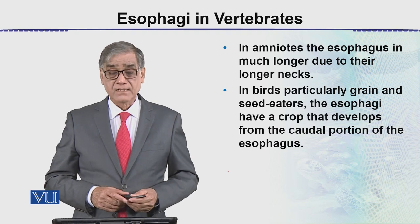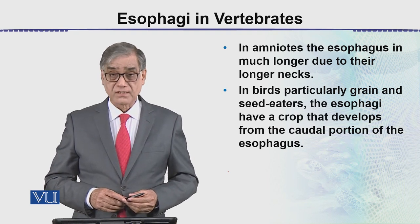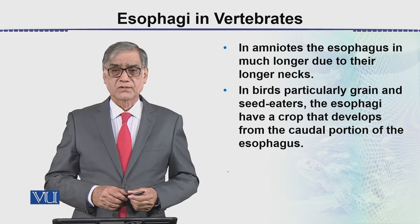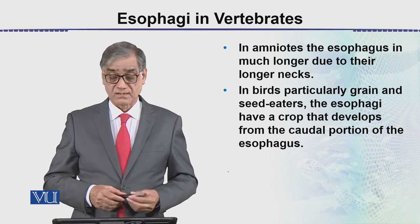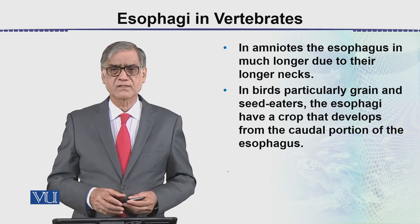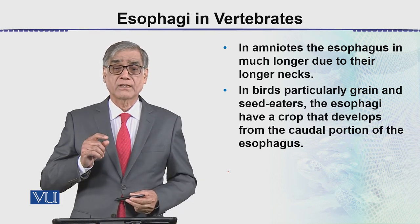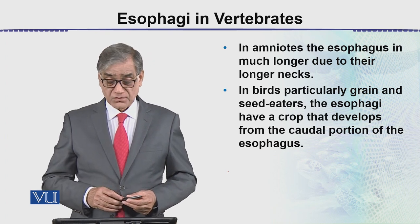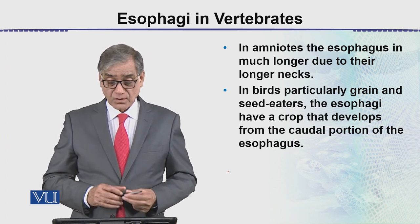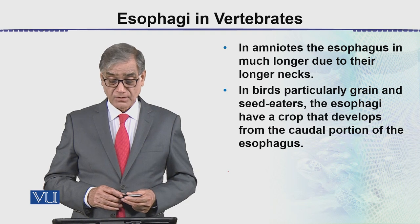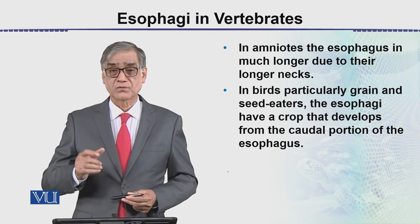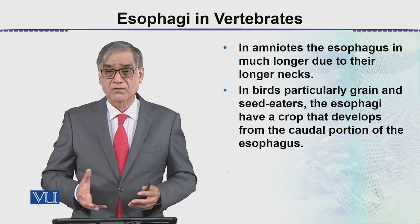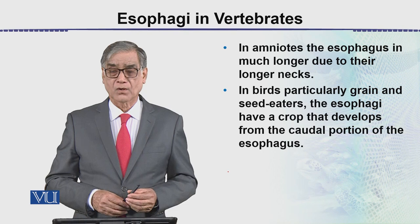In birds, particularly grain and seed eaters, depending upon the food of the birds, these are unique adaptations. The esophagi have a crop that develops from the caudal portion of the esophagus — the caudal portion dilates to form what is called a crop.